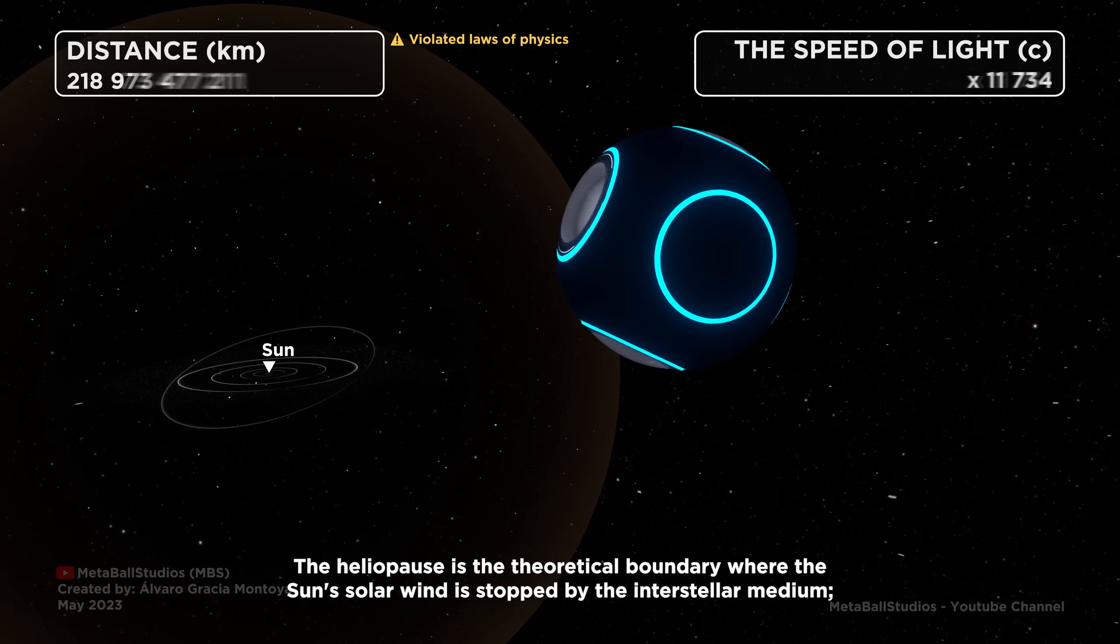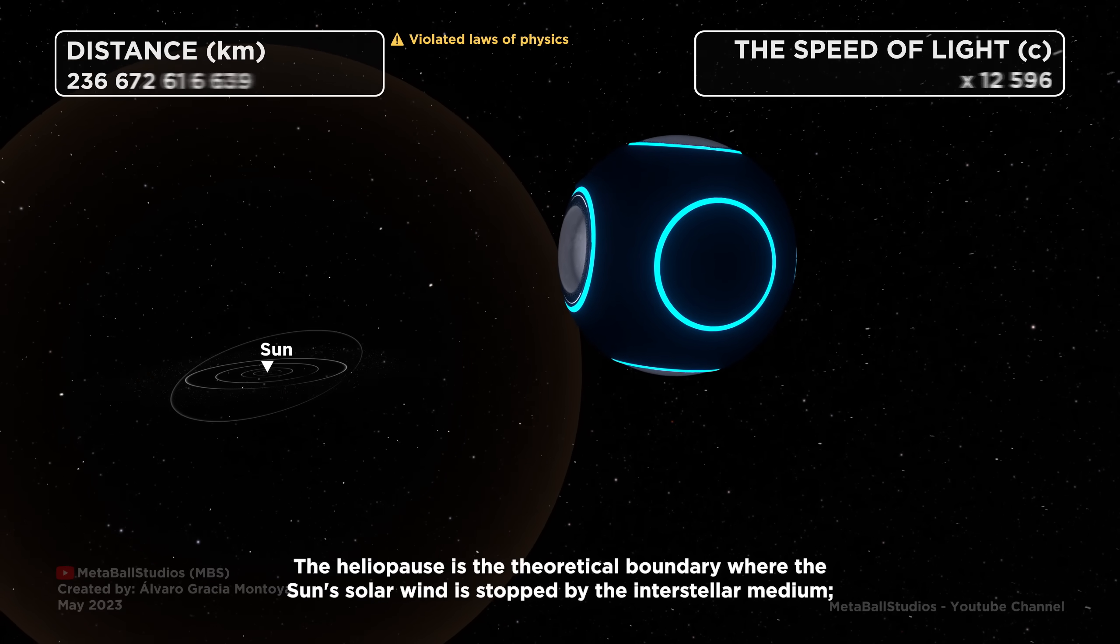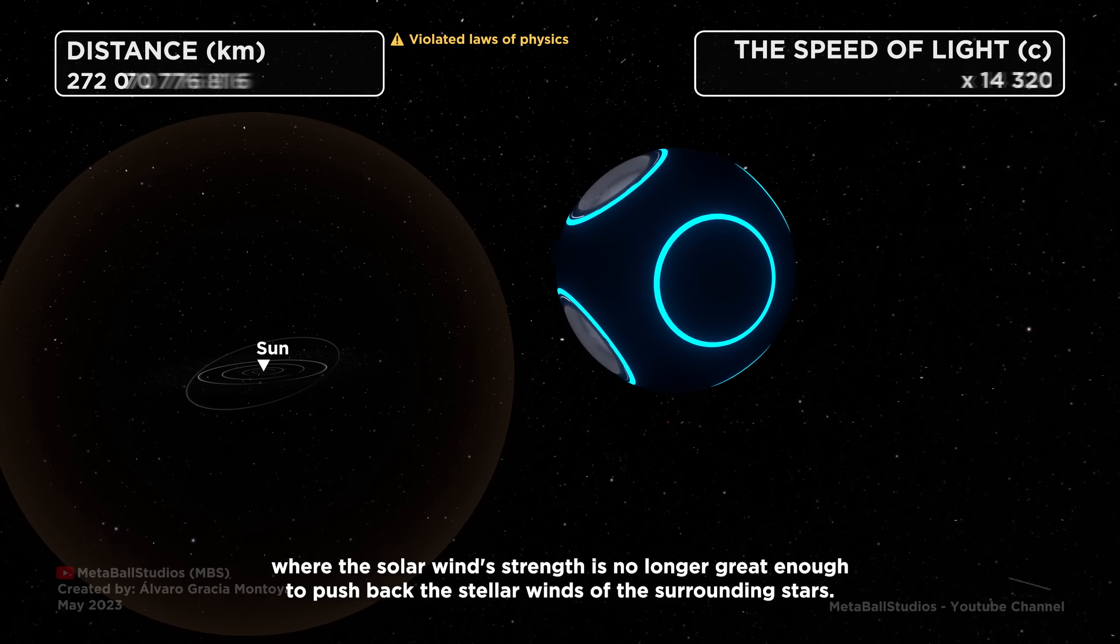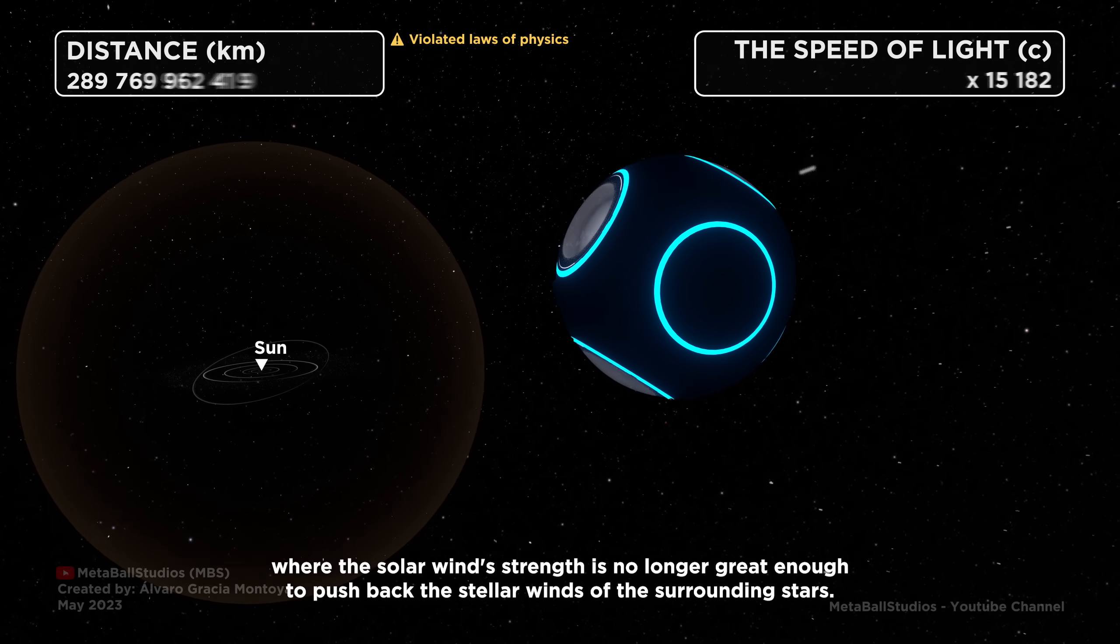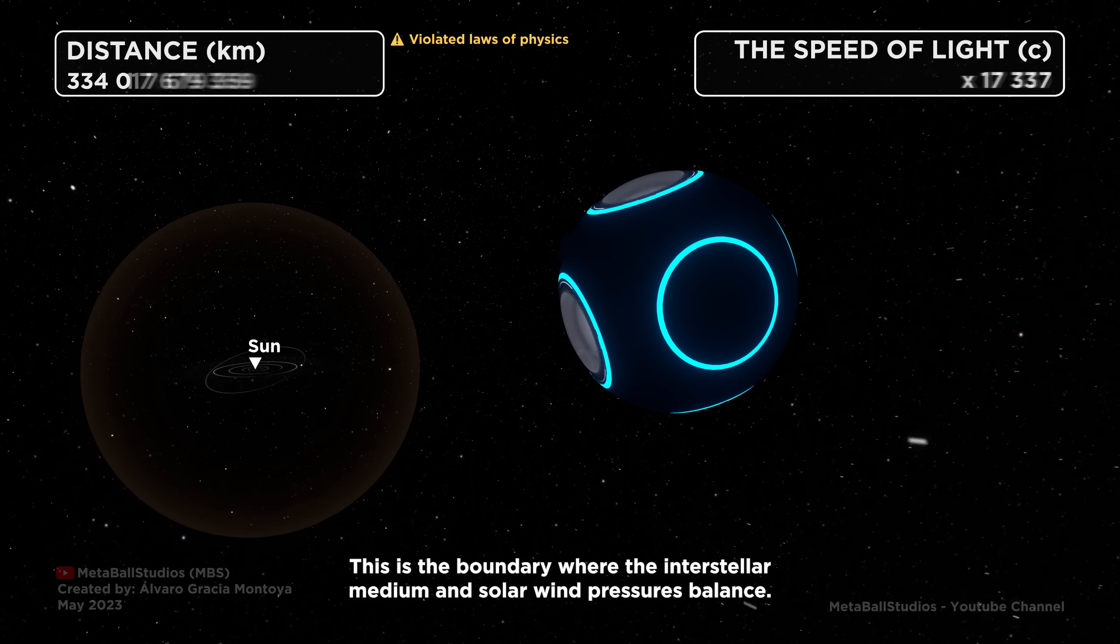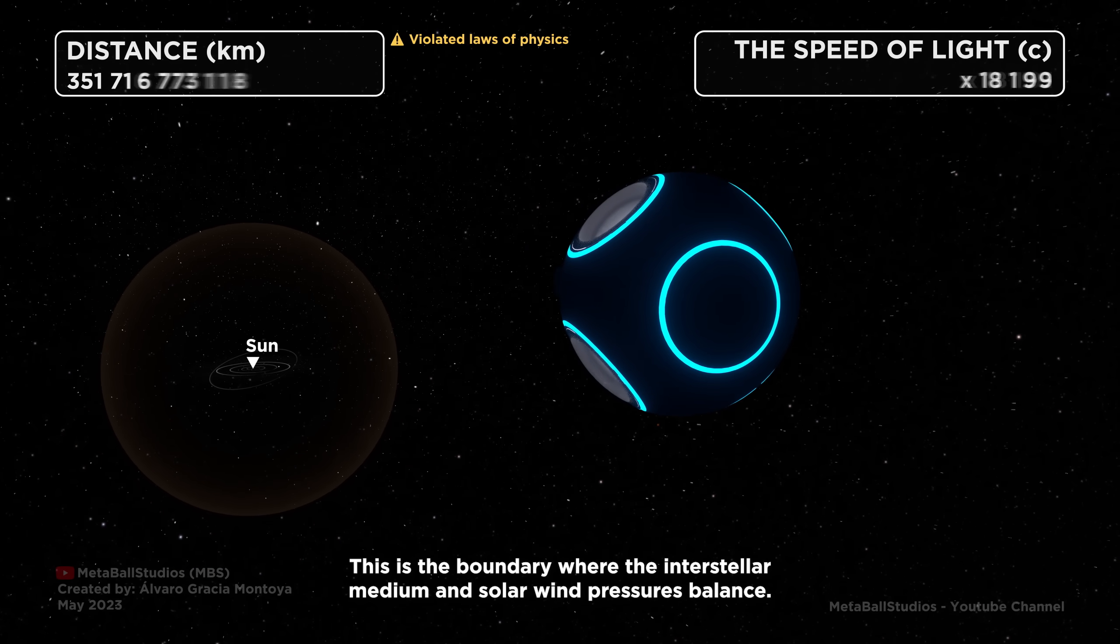The heliopause is the theoretical boundary where the Sun's solar wind is stopped by the interstellar medium, where the solar wind's strength is no longer great enough to push back the stellar winds of the surrounding stars. This is the boundary where the interstellar medium and solar wind pressures balance.